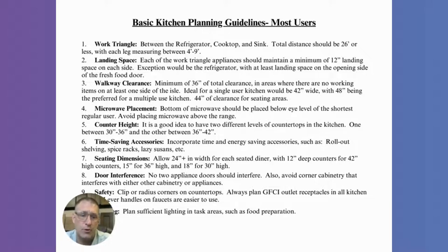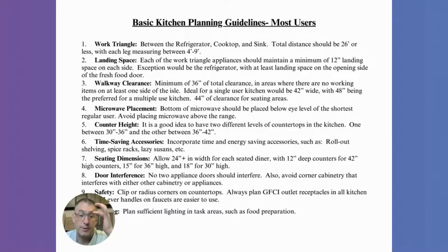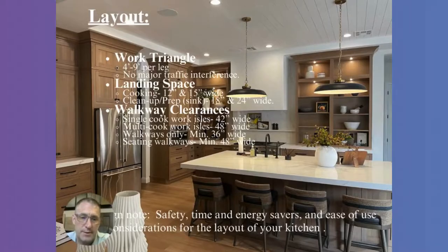Door interference: no two appliance doors should interfere because sometimes you want to use both appliances at the same time — like when someone wants to open the dishwasher while someone else opens the oven. The same applies to corner cabinets. Make sure you can use those doors or drawers. For safety: avoid sharp corners, and you're now required to have GFCI outlets if you're pulling a building permit, which you should in most markets — they'll require code compliance and inspection. Make sure your lighting is sufficient for task areas — ambient light for the general space, accent lighting for mood, and task lighting for cooking, cleaning, and work areas.